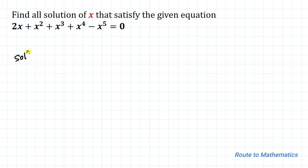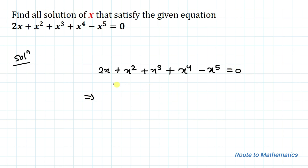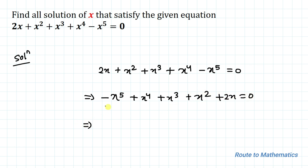So without any delay let's start the solution. The given equation is 2x plus x squared plus x cubed plus x to the power 4 minus x to the power 5 equals 0. In the next step, let's arrange the equation from highest degree to lowest degree, so we have minus x to the power 5 plus x to the power 4 plus x cubed plus x squared plus 2x equals 0.